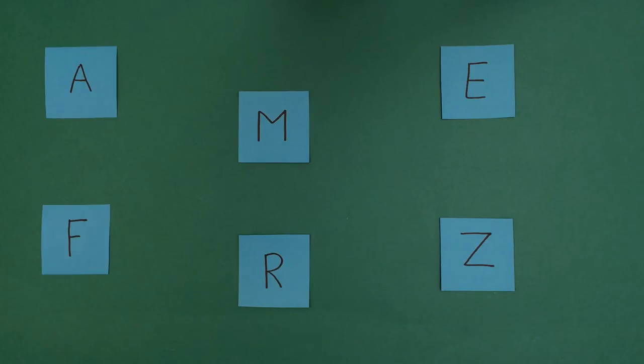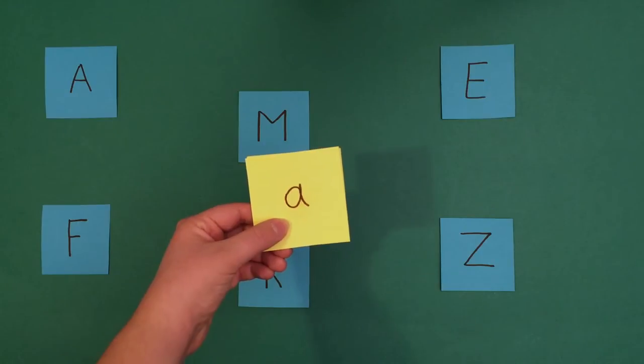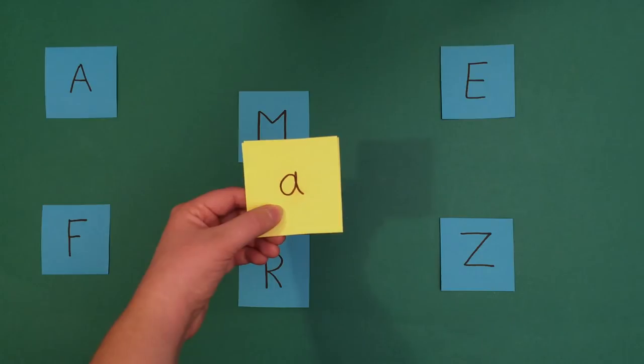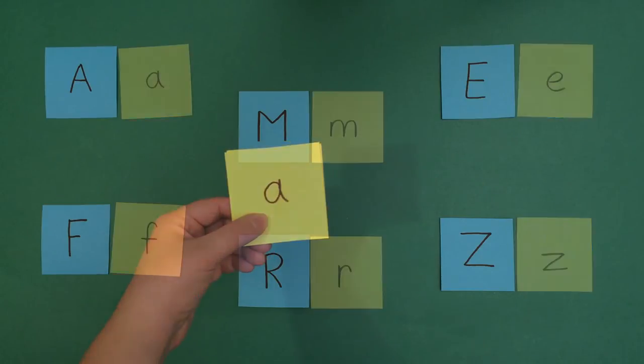Then you can give the lowercase letters to the child and ask them, can you place these lowercase letters next to their matching uppercase letters? And the child can match the letters.